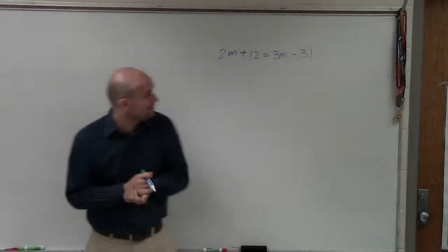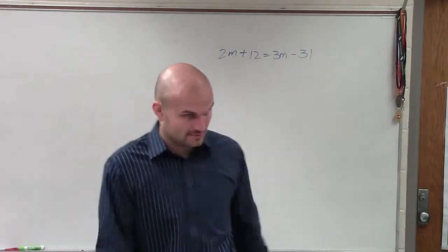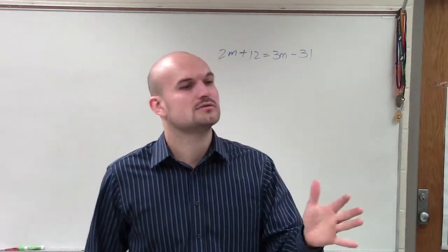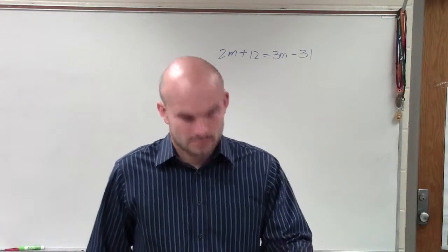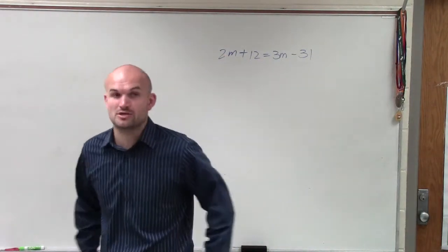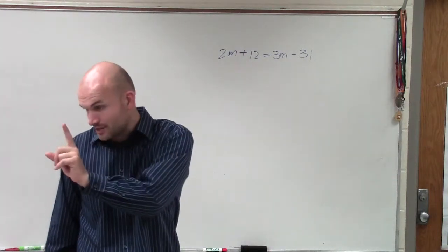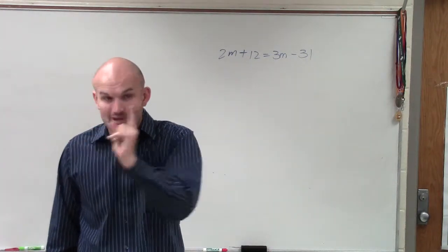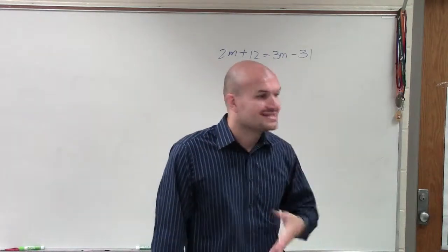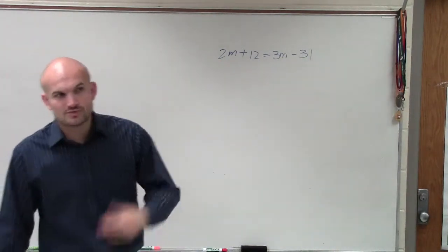When we look at a problem like this, we have 2m plus 12 equals 3m minus 31. When doing a problem like this, ladies and gentlemen, the first thing we notice is we have more than one variable for the first time, right? Now we have two variables, and what's even more confusing is now we have two variables on opposite sides of the equal sign.